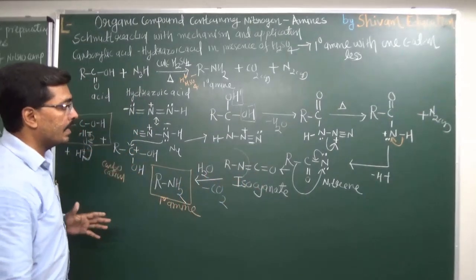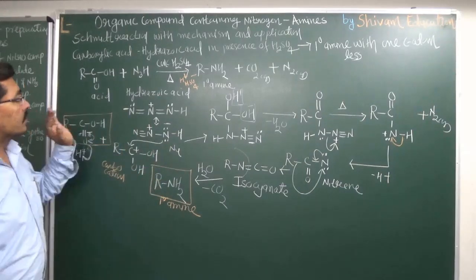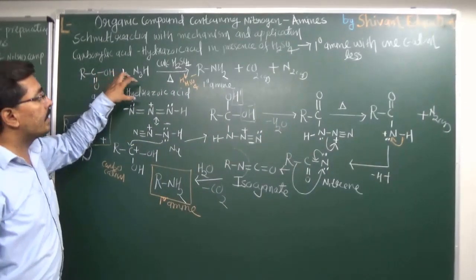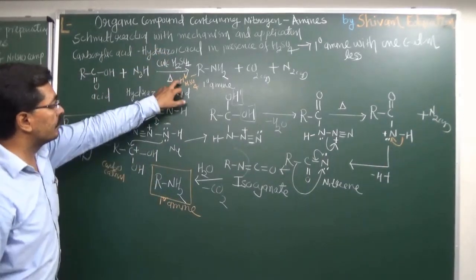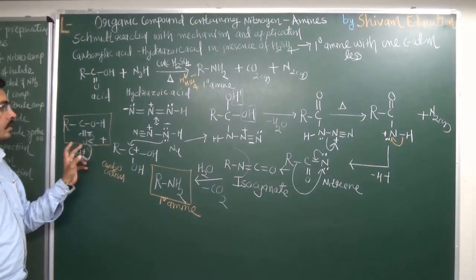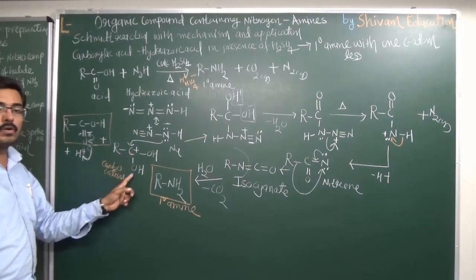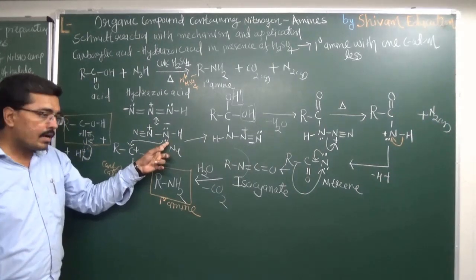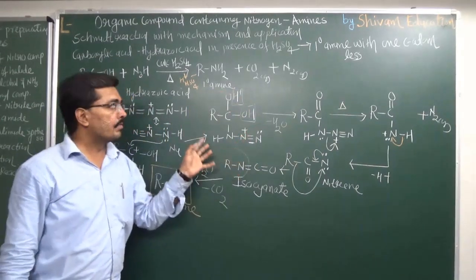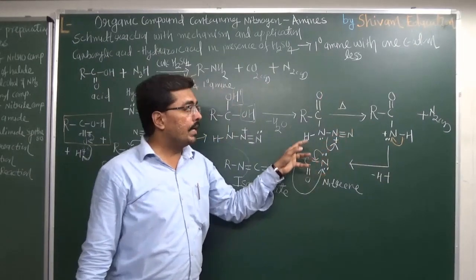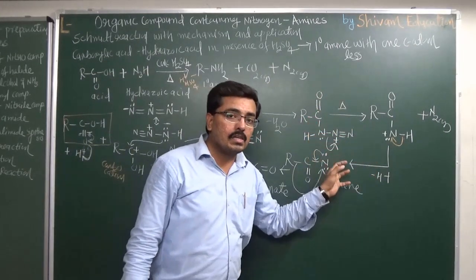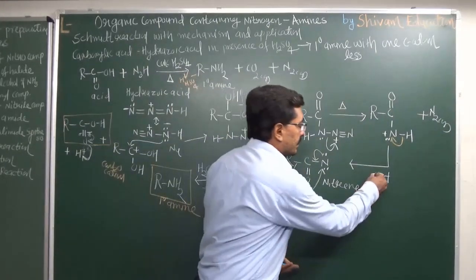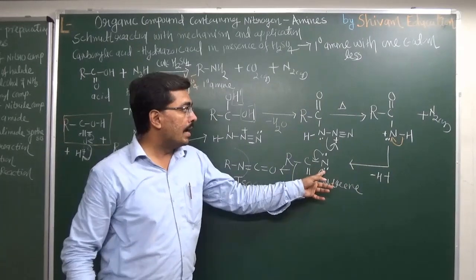Once again, here is how the Schmidt reaction converts carboxylic acid into primary amine. Carboxylic acid reacts with hydrazoic acid in the presence of concentrated sulfuric acid. The H⁺ ion from sulfuric acid approaches the oxygen; on protonation, the pi bond breaks and electrons transfer to oxygen. Hydrazoic acid's nitrogen attacks the carbon, giving the intermediate from which water is eliminated. The best leaving group, N₂, is then removed, giving a structure where nitrogen has a positive charge.